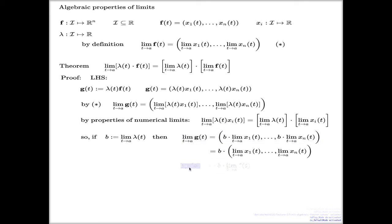And now, I can say by asterisk again, because it's another reference to the asterisk, by asterisk again, this is b times the limit of bold f(t). And that's the right-hand side of the expression we need to prove.